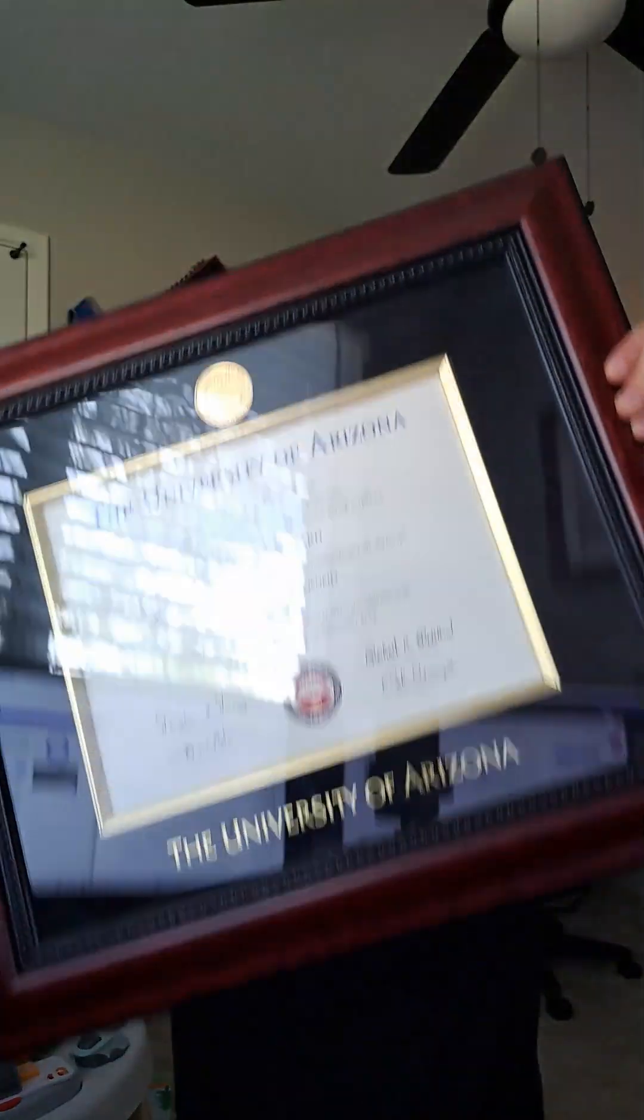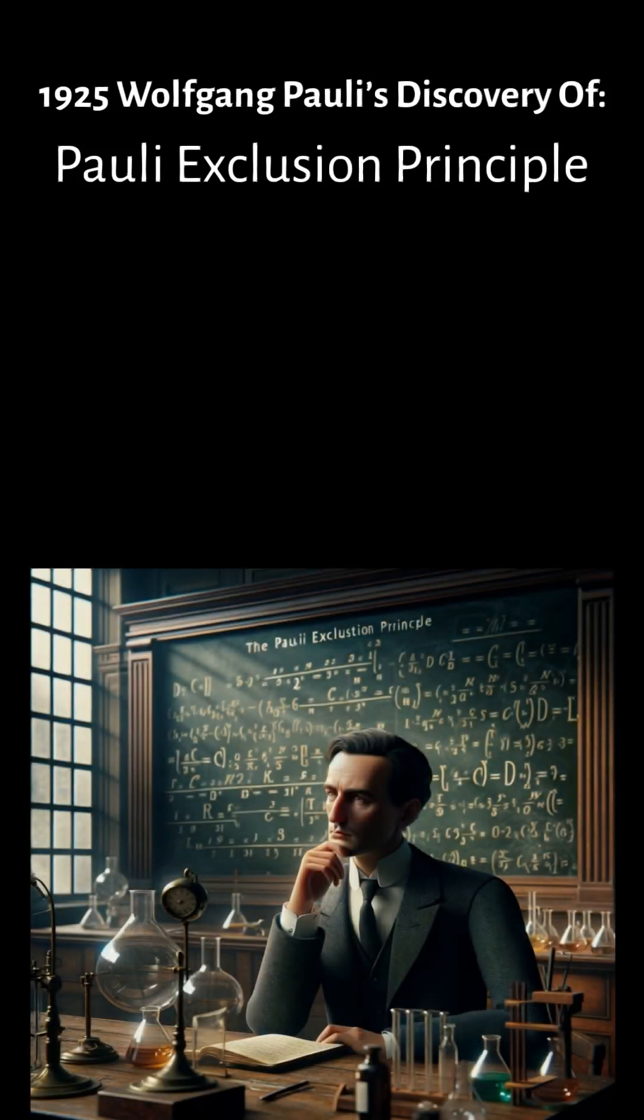This is my PhD in chemistry, and this is the overview of the Pauli Exclusion Principle. In 1925, Wolfgang Pauli's discovery of the Pauli Exclusion Principle was the final key to physicists being able to accurately represent electrons in their respective orbitals in an electron shell.